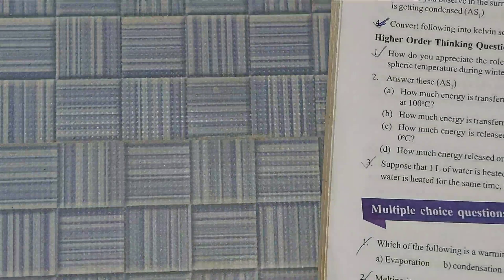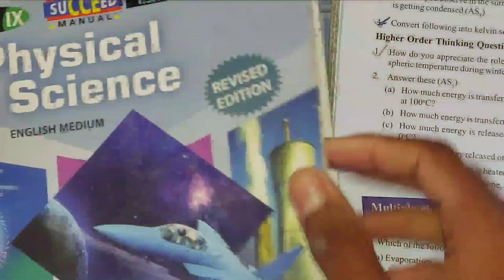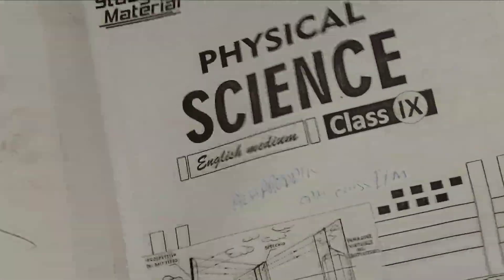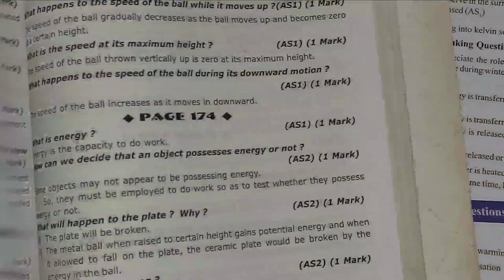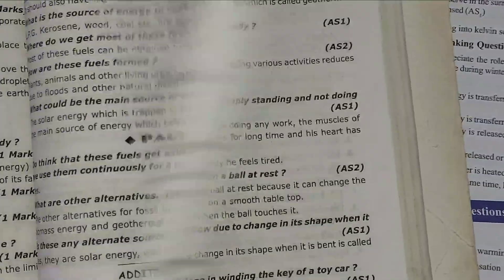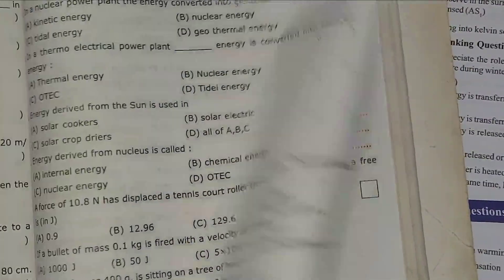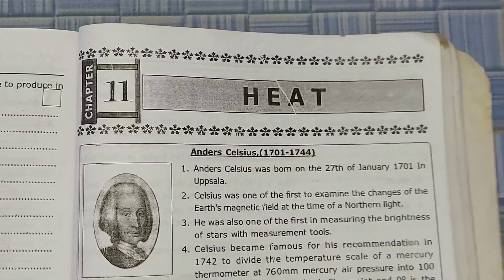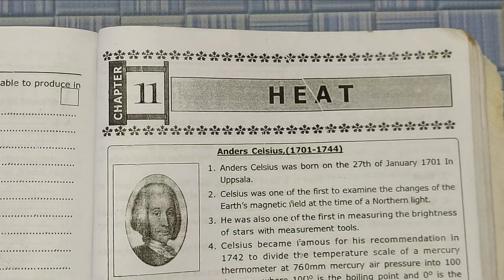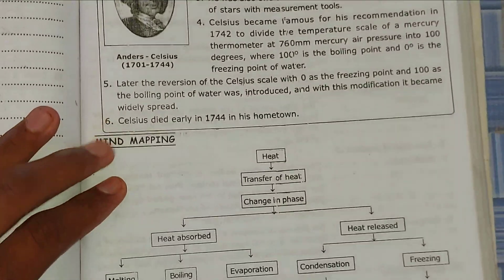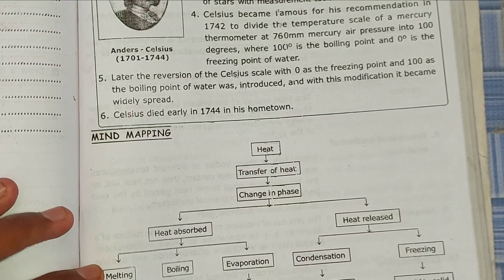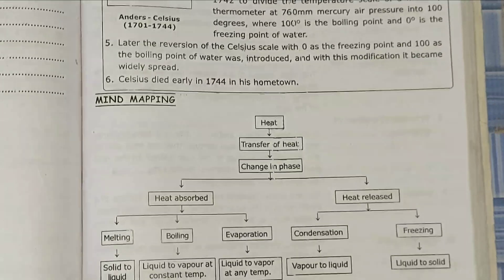In my Physical Science Question Bank, first we will open page number 345 — Chapter 11, Heat. First we will see the mind mapping. You can see here the mind mapping.